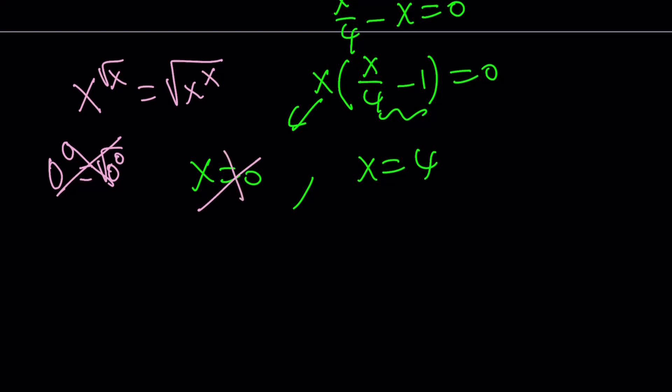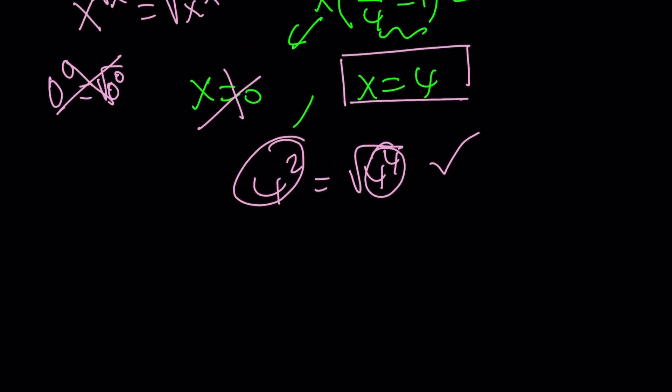Therefore, we end up with x = 4, which seems to be working. If you plug it in, 4^2 equals √(4^4). This is 16, that is 256, and you get the idea. Make sense?